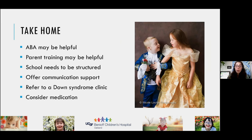Take-home points on supporting children with a dual diagnosis: ABA may be helpful. Parent training may be helpful. School can help a lot and needs to be structured. Definitely support communication. Refer to a Down syndrome clinic, and consider medication when appropriate.